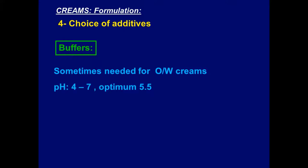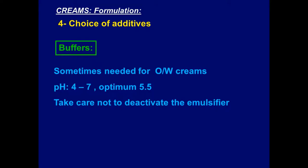Buffers are used to adjust the pH of the cream between 4 and 7, and the optimum value is 5.5. Take care that the buffer does not deactivate the emulsifier. If you use an amphoteric emulsifier, its efficiency depends on pH. If the buffer deactivates the emulsifier, you should not replace the buffer — you should replace the emulsifier with another one that is not affected by the pH optimal for creams.